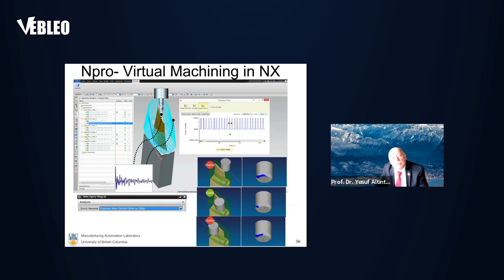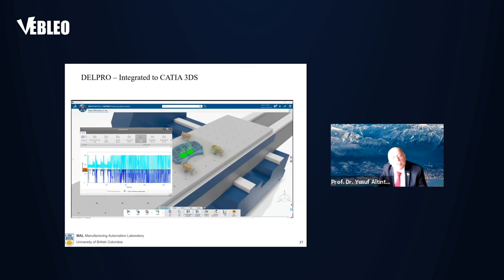Here, the engineer, as soon as the engineer generates the toolpath, the engineer can see the process as well, force, torque, power, vibrations, so they can take corrective action before machining the part physically. We also integrated this technology to CATIA 3DS, the same idea.